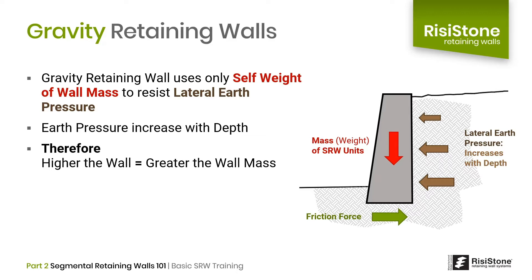When designing a gravity wall, we look at three possible ways it can fail. We consider a wall to have failed when it has moved in some way from its original position.